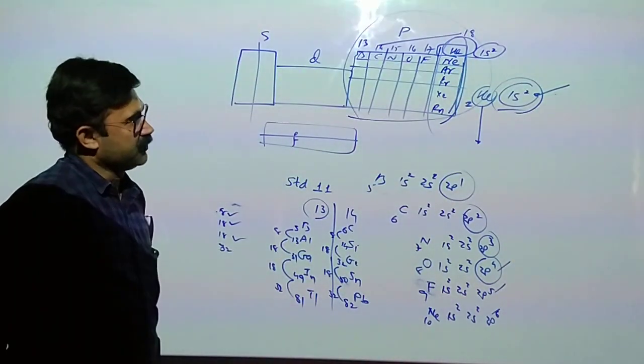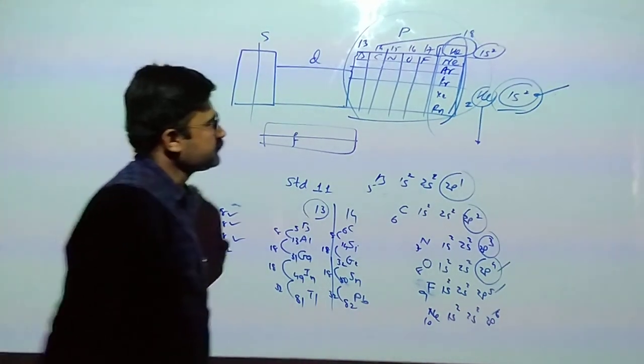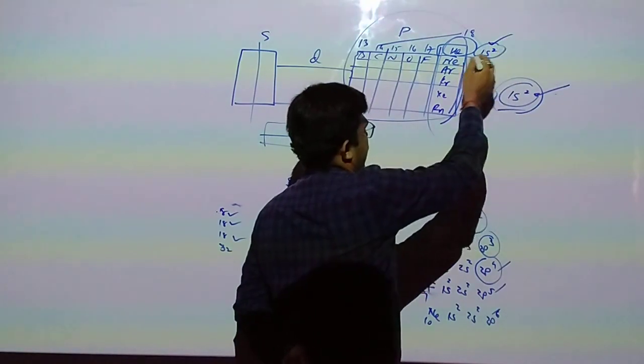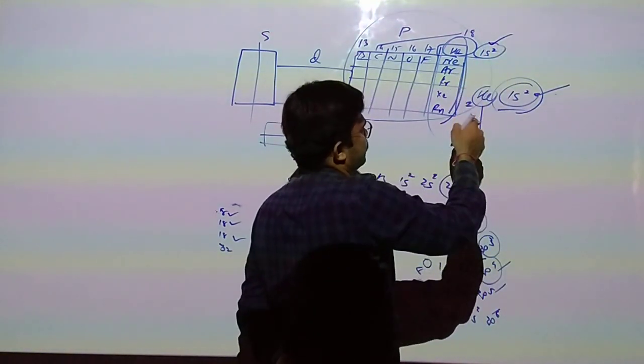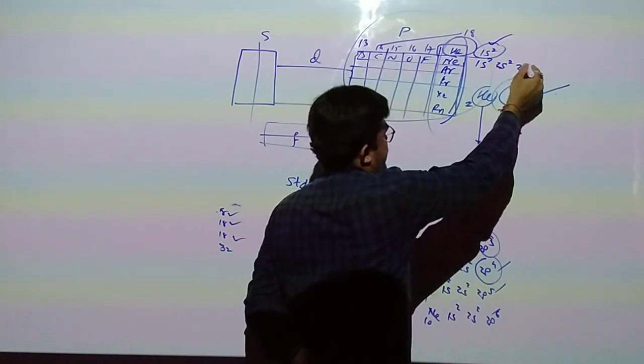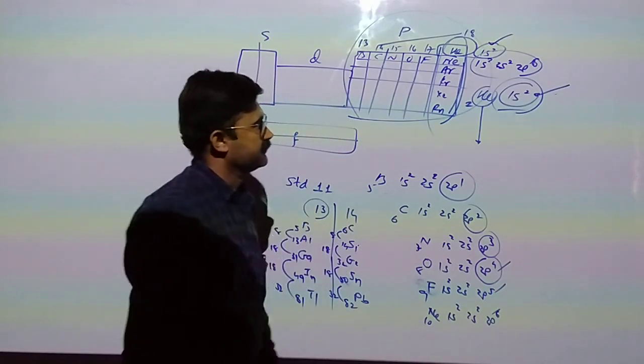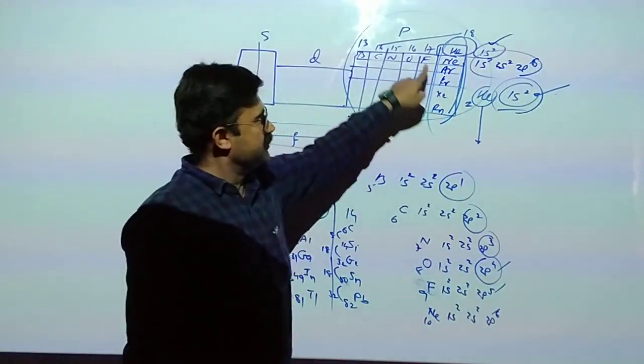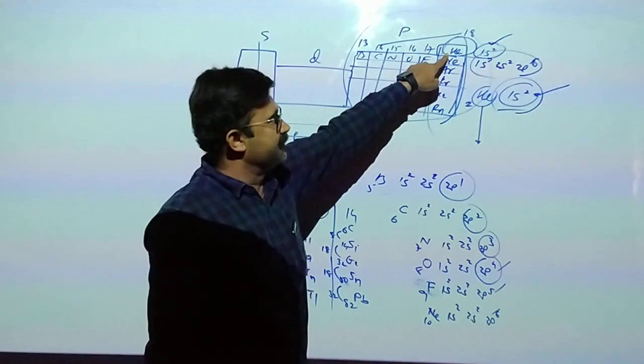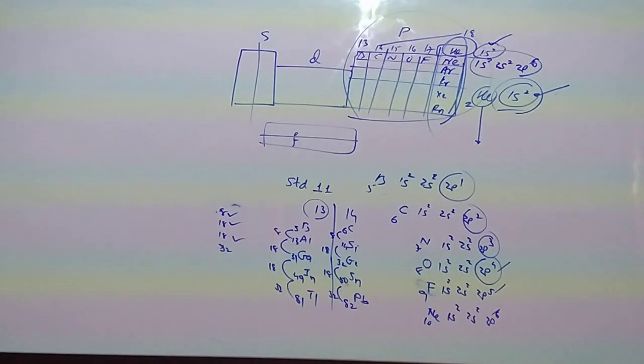So Helium is member of group number 18 but not a member of p-block. P-block has group number 18 also. In Neon 1s2 2s2 2p6, last coming electron in all these elements except Helium enters in p orbital. So in our syllabus, p-block there are 6 groups, 13 to 18.